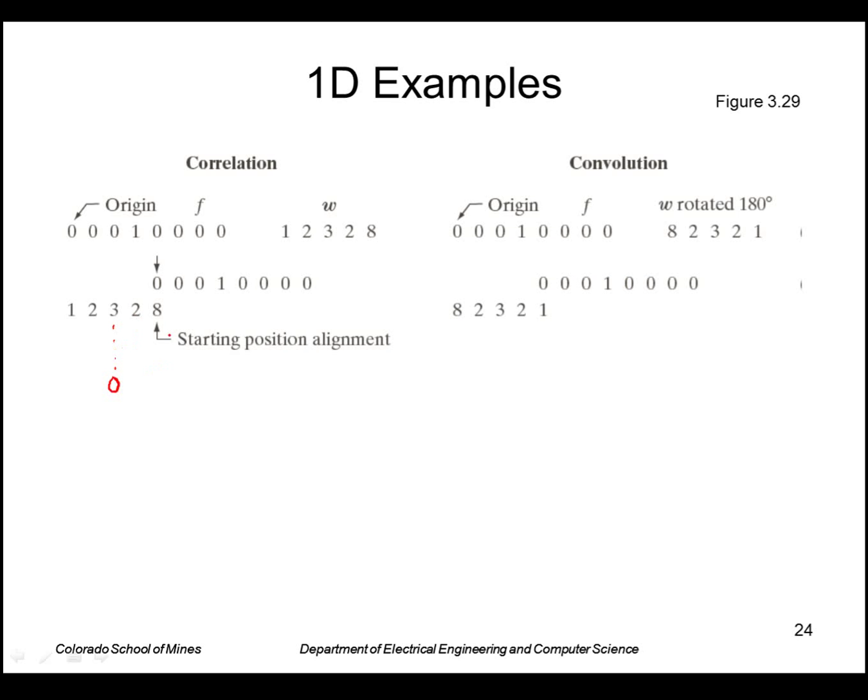The next position is also zero. Next position is also zero. So in this next position the eight will align with the one. So I have eight times one which is eight.